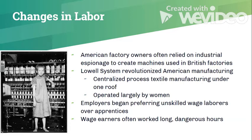The Lowell system revolutionized manufacturing — creating not just textiles but also a community with housing and stores where workers could live. A lot of young women moved off farms and into these industrial textile cities. We also see a lot of people starting to earn wages instead of just producing for themselves or living a subsistence lifestyle. More and more, people are relying on others to produce their goods and using wages to participate in a commercial economic system.